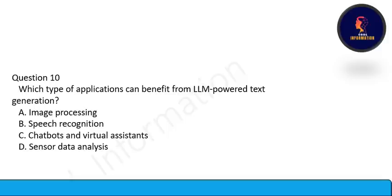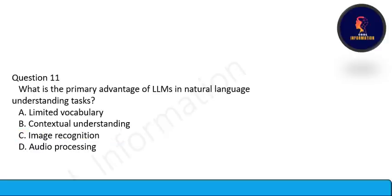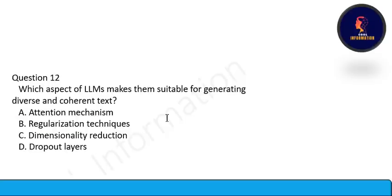Next question: Which types of applications can benefit from LLM-powered text generation — image processing, speech recognition, chatbots and virtual assistants, or sensor data analysis? The correct option is C: chatbots and virtual assistants. Next: What is the primary advantage of LLMs in natural language understanding tasks? Contextual understanding. Option B is correct. Which aspect of LLMs makes them suitable for generating diverse and coherent text? Attention mechanism. Option A is correct.